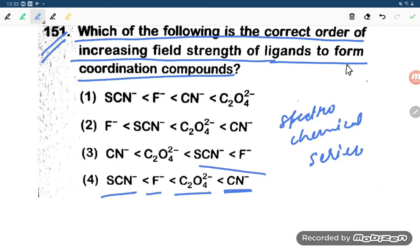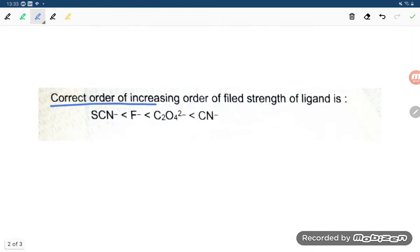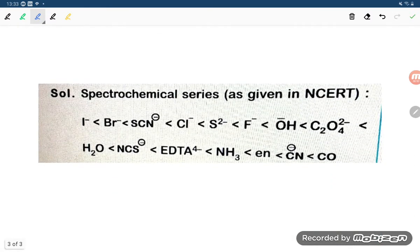So the correct option is option number four. Let us read this out. Here is the correct order of increasing order of field strength of ligand: CN⁻, oxalate, fluoride ion, and thiocyanide.